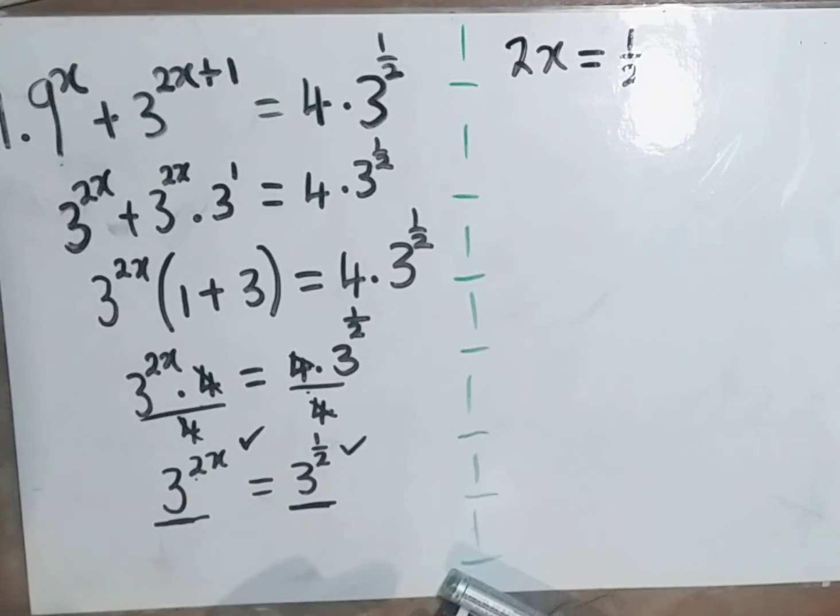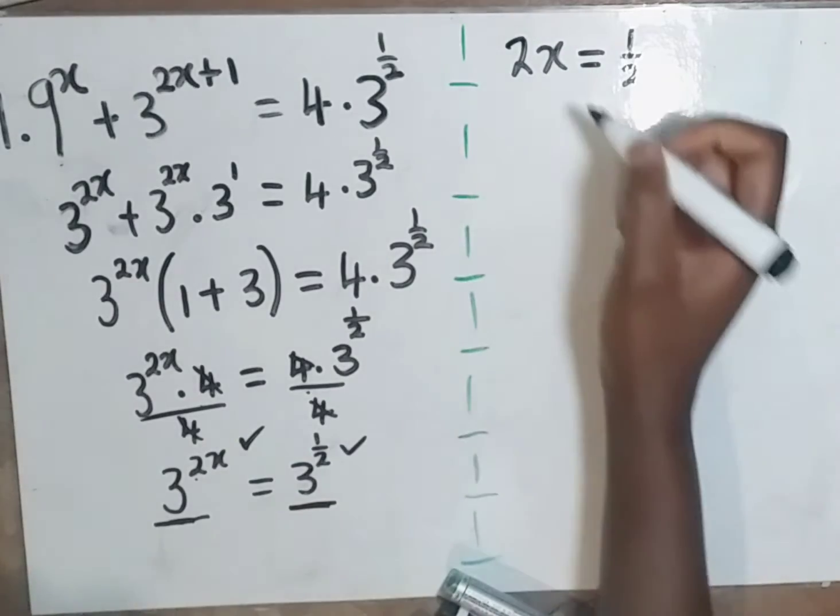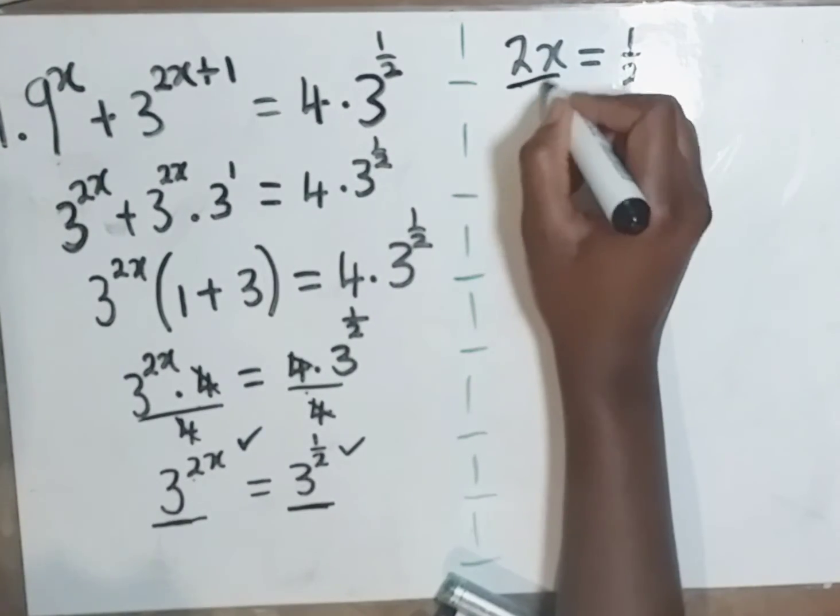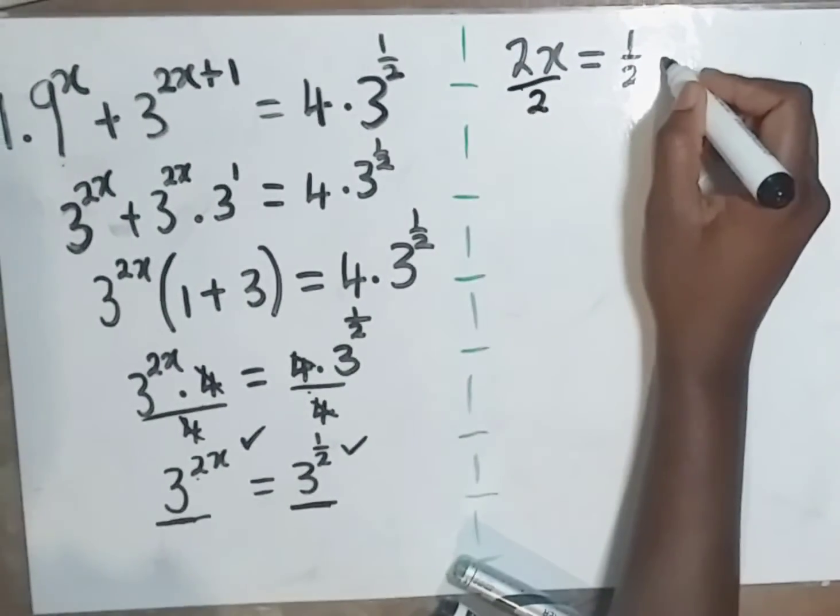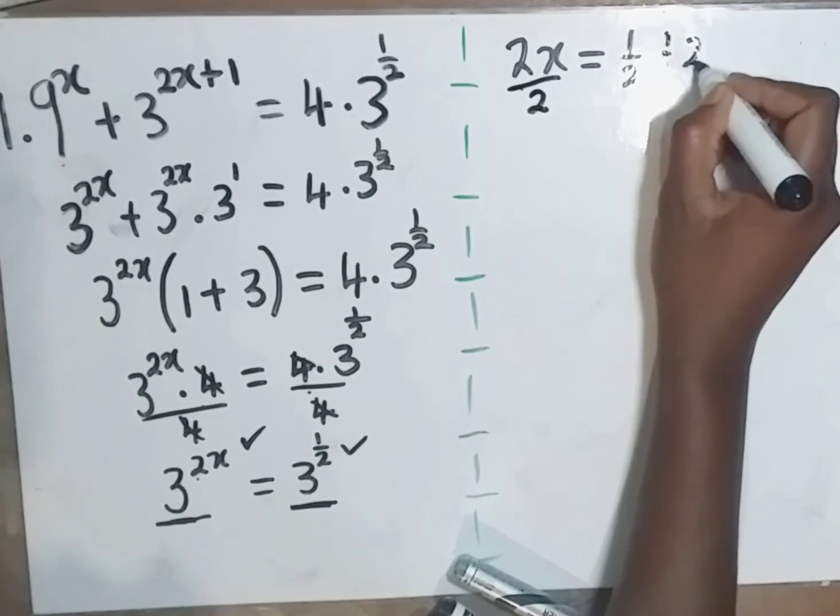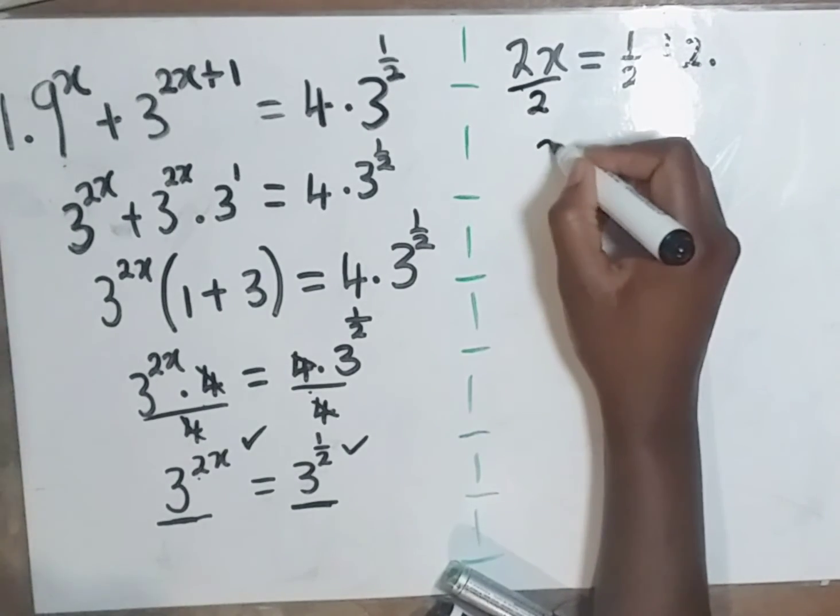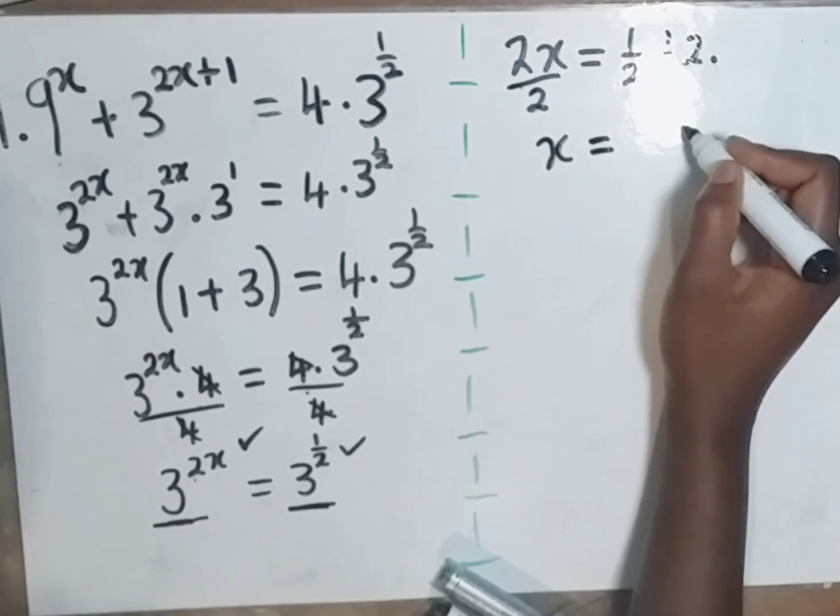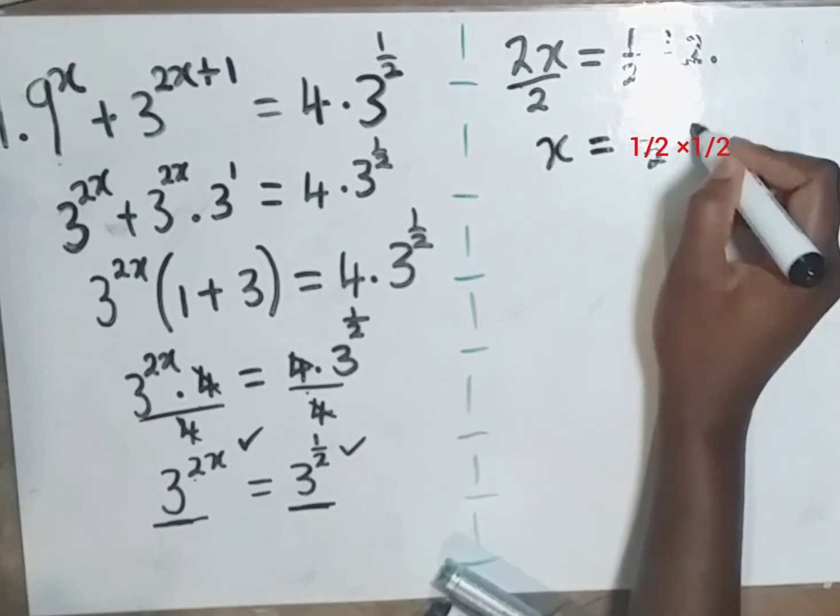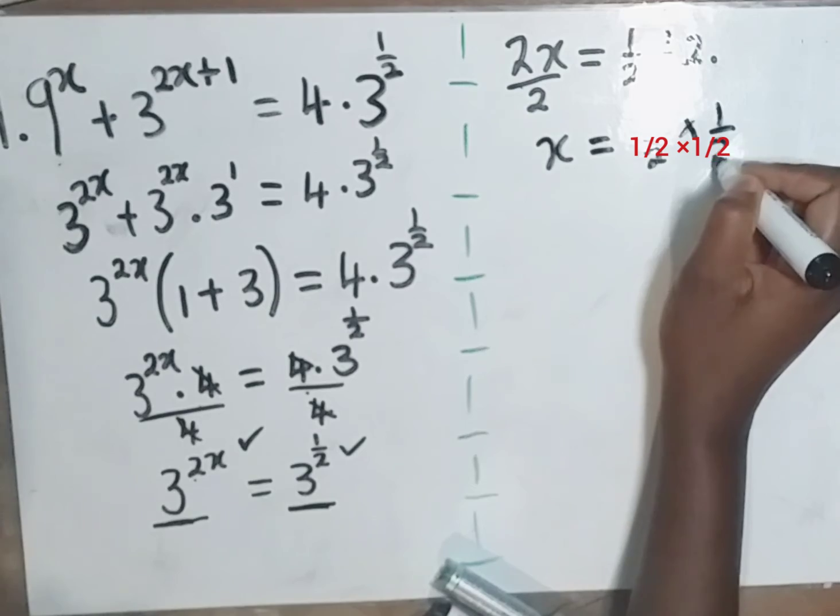2x is equal to half. Now let's solve for x. How are we going to do that? Let's divide by 2 both sides. So x is equal to half divided by 2, is the same as half times 1 over 2.